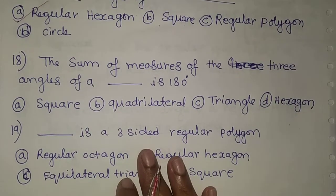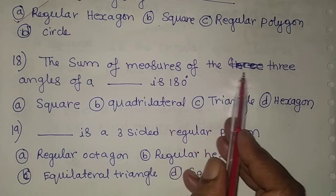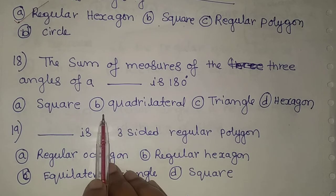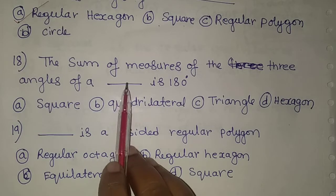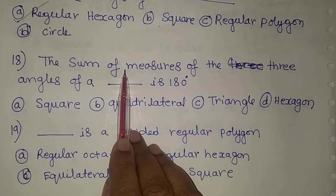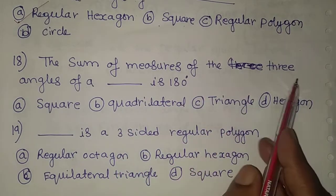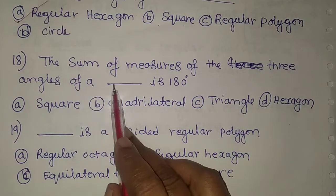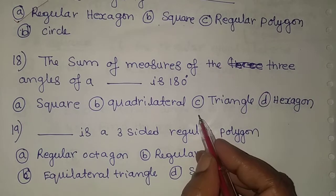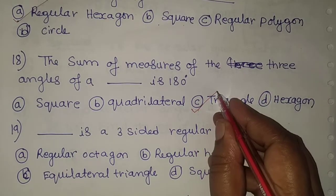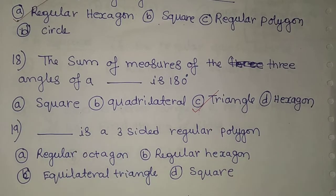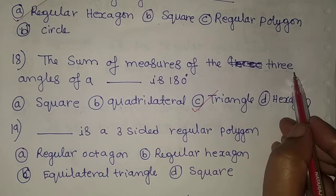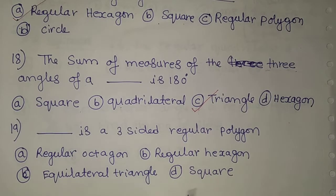The 18th problem: the sum of the measure of three angles of a blank is 180 degrees. The answer can be found in the question itself — three angles summing to 180 degrees means it is a triangle. Options are square, quadrilateral, triangle, and hexagon. Option C, triangle, is the correct answer.